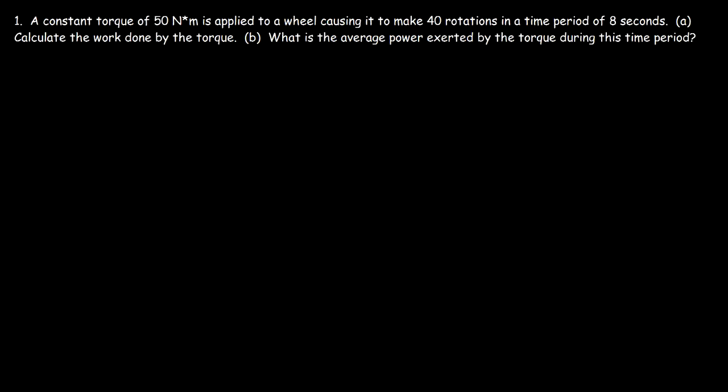In this video we're going to talk about how to calculate the work done by a constant torque. In this problem we have a constant torque of 50 Newton meters applied to a wheel, causing it to make 40 rotations in a time period of 8 seconds. Calculate the work done by the torque.